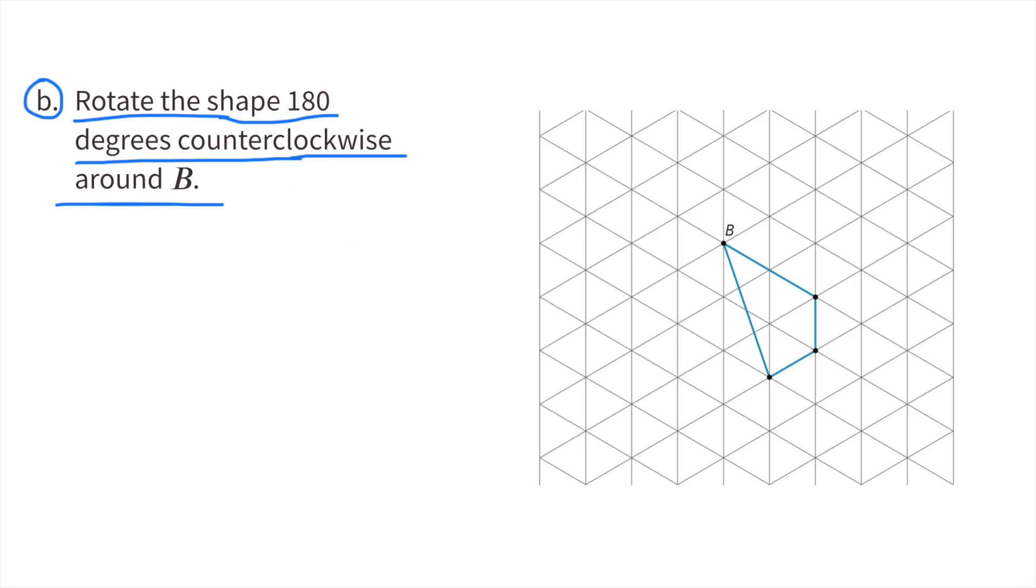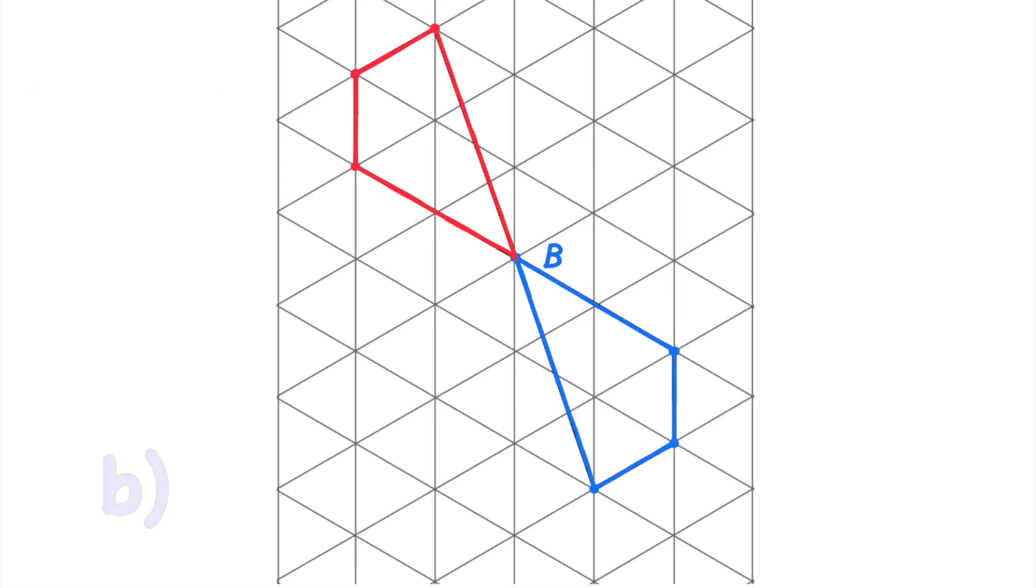B. Rotate the shape 180 degrees counter-clockwise around B. Represented in red, you can see the new location after a 180 degrees counter-clockwise rotation.